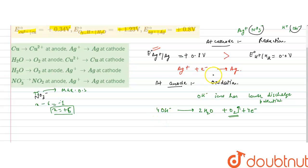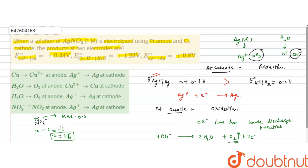So the products will be - at cathode, silver is formed, and at anode, oxygen is obtained. So option C will be correct. At anode, oxygen will form, and at cathode, silver will be obtained. So the correct option is C.